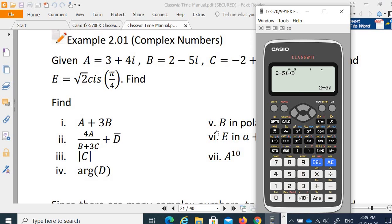Let's say I am going to do A plus 3B. So alpha A plus 3 times alpha B. You get 9 minus 11i. So 3 times 2 is 6, so 9. This 3 times negative 15 plus 4, so negative 11. So if you want to do this one: 4A divided by B plus 3C plus conjugate of B.